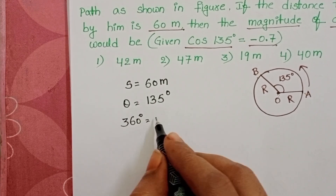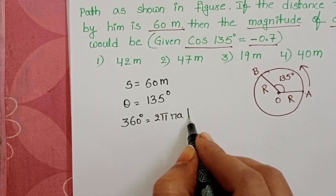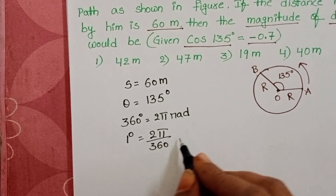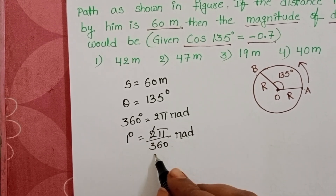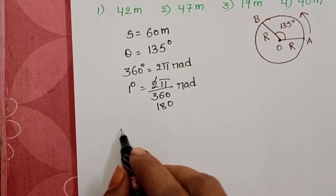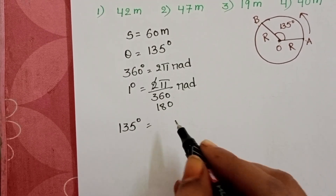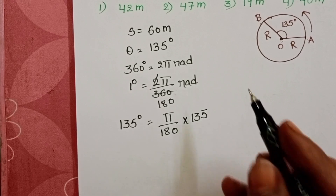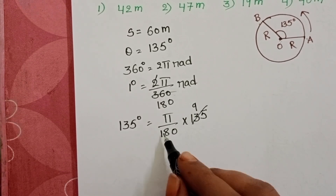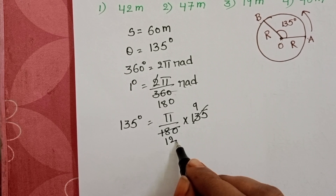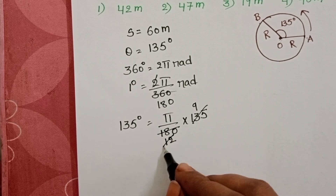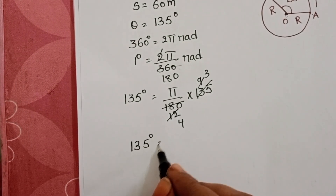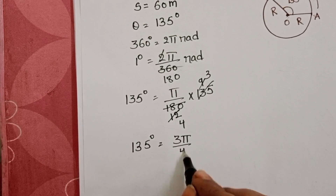360 degrees equals 2π radians, so 1 degree equals π/180 radians. Therefore, 135 degrees becomes (π/180) × 135. Simplifying: 135/180 = 3/4, so 135 degrees equals 3π/4 radians.